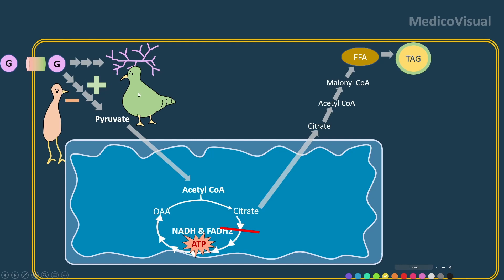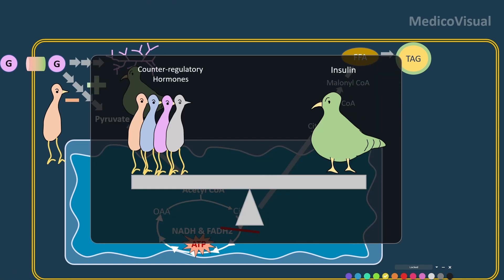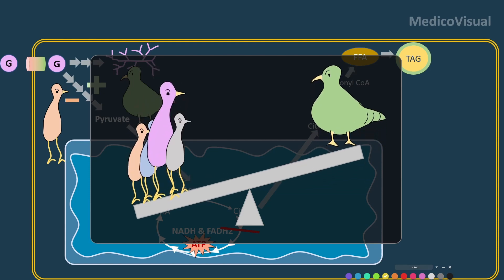So because of this, there will be resistance to the actions of insulin, there will be hyperglycemia, and ultimately there will be diabetes. One classical example of this is Cushing syndrome.